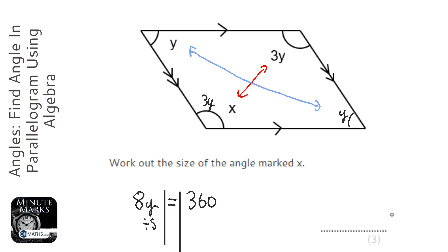So, if I divide by 8 both sides, and the way of doing that, if it's non-calculator, is halve it, halve it again, then halve it again. So, half of 360 is 180, half of that is 90, half of that is 45, so y is 45.